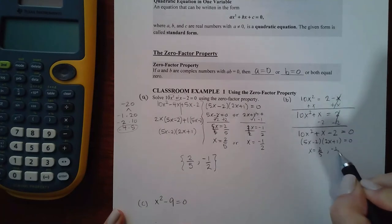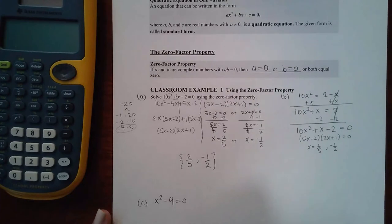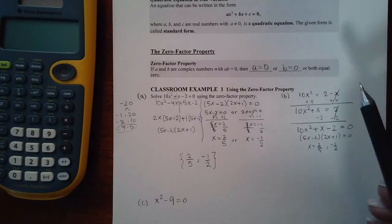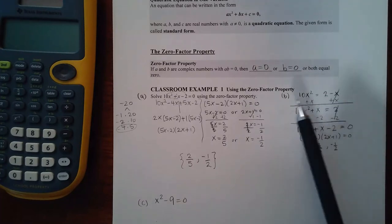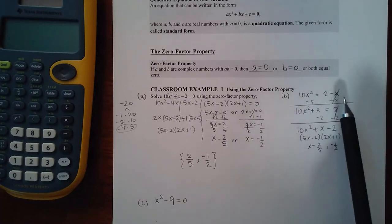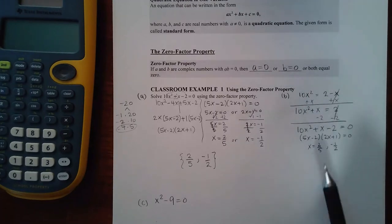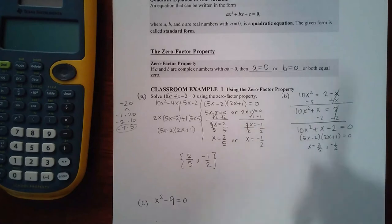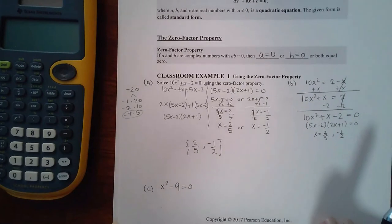The point of this was not to go through the factoring again. The point of this problem was just so that you could understand that it might not be equal to 0 every single time you see the equation, and you will have to move terms around so that it is equal to 0 before you start factoring. That's what we needed to learn from that second example.